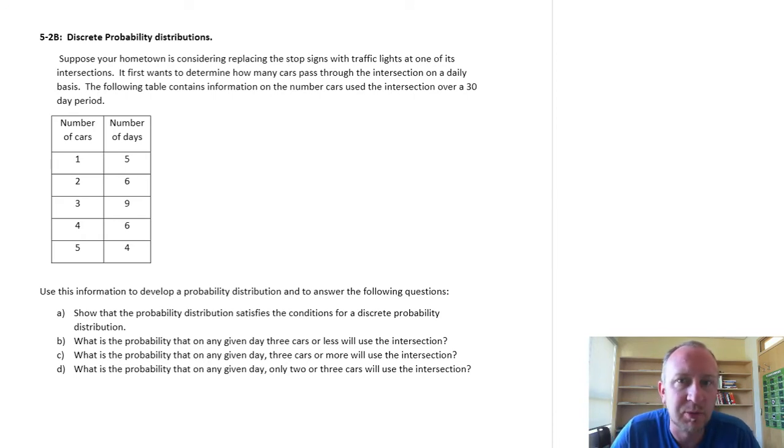This time we're looking at what might be a small town dilemma, considering replacing stop signs with street lights at one of the intersections. We first want to determine how many cars are using the intersection on a daily basis. The following table contains information on the number of cars using the intersection over a 30-day period.